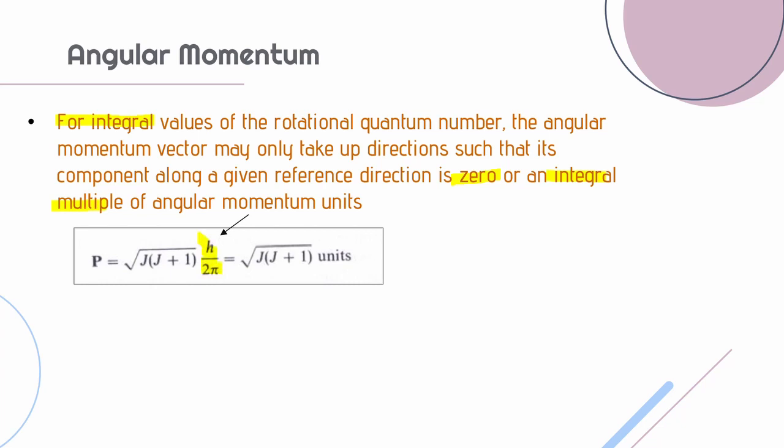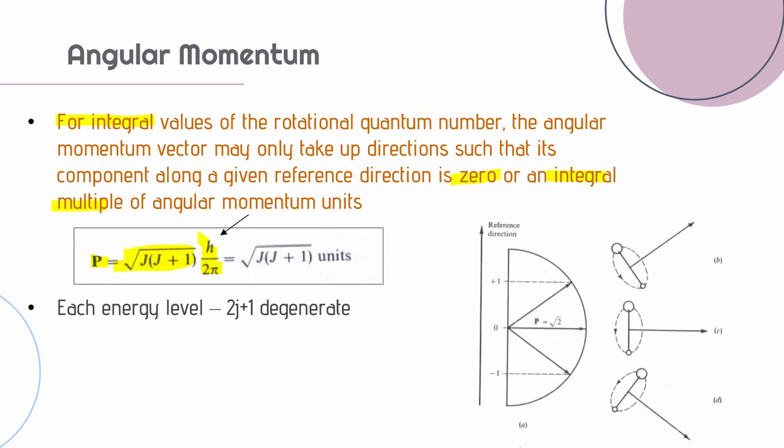The magnitude of angular momentum is given by the square root of J into J plus 1 times angular momentum units. Each energy level has 2J plus 1 degenerate orientations. For example, J equals 1 we have 3 different orientations as you can see in this figure. We have a reference vertical line and we observe that each of these orientations have component values equal to plus or minus 1 or equals 0 along the reference line.